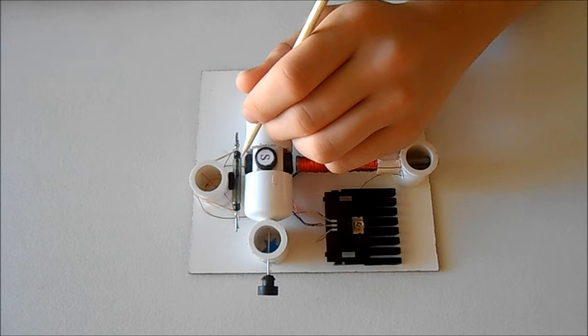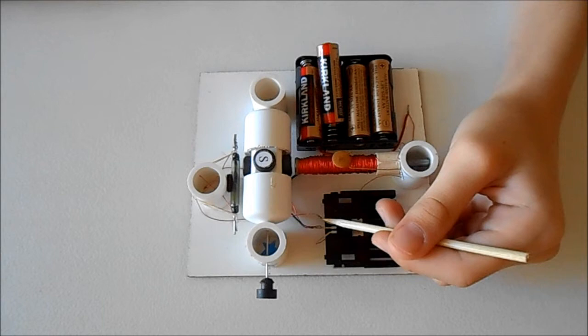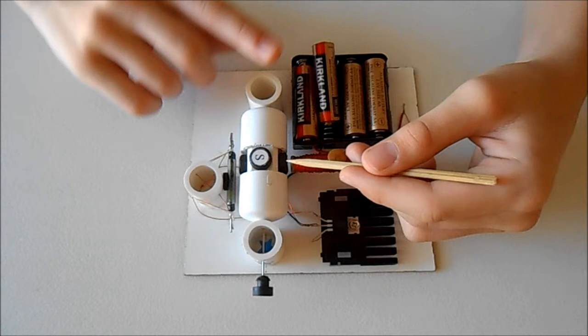When this magnet is within the working range of the reed switch, the contacts inside the glass tube are connected, and a small current goes from the battery through the reed switch to the base of the transistor. The transistor turns on and then a big current goes from the battery through the emitter collector junction, the transistor, and then through the electromagnet. The electromagnet pushes this magnet away.